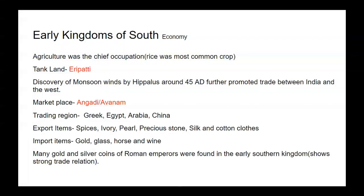They used to export items like spices, ivory, pearl, precious stones, silk and cotton clothes. They used to import gold, glass, horse and wine. Many gold and silver coins of Roman emperors were found in early southern kingdom sites, indicating strong trade relations with foreign countries, especially Rome.